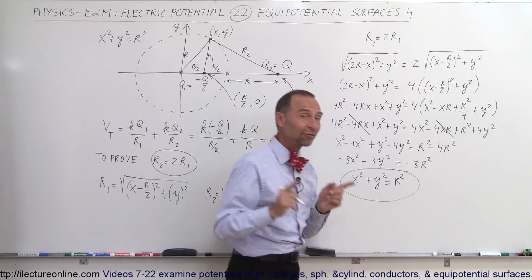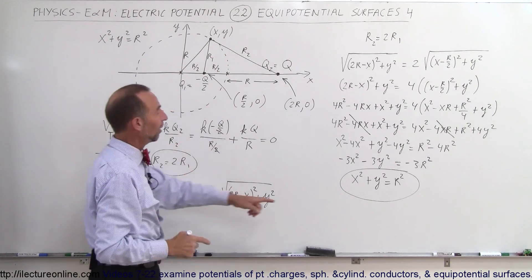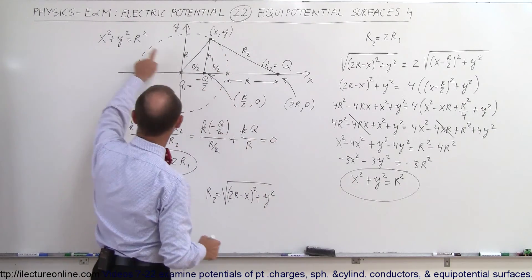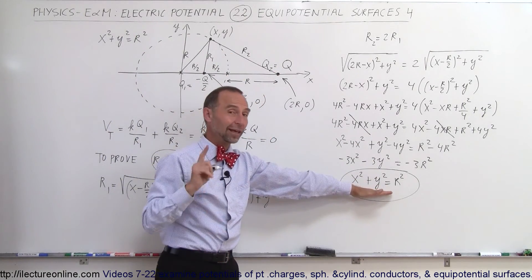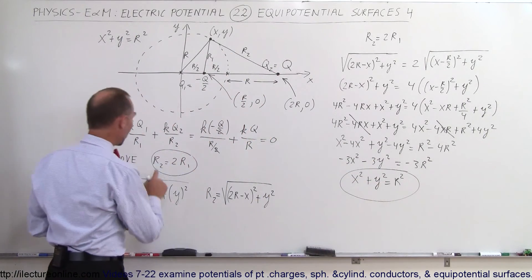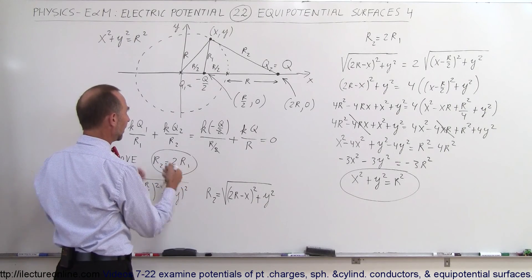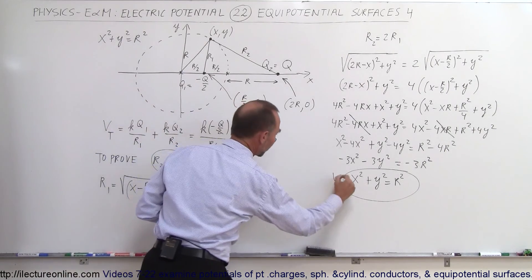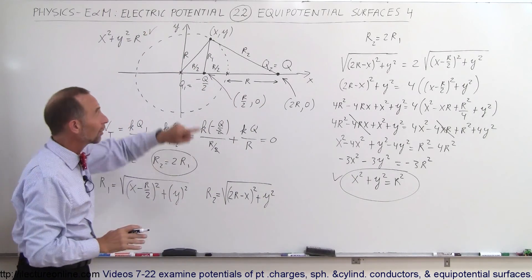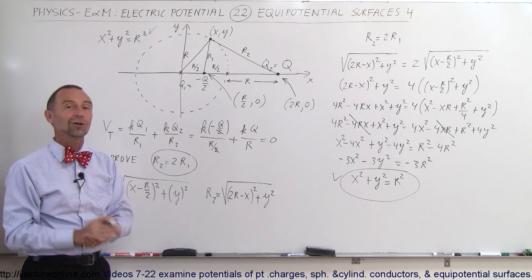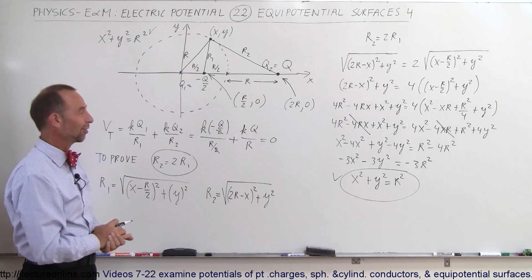This result, x² + y² = R², is exactly the equation of the circle we started with. That confirms the premise that R2 = 2·R1 holds everywhere on the circle, proving that the potential is zero at every point along the circle. So this circle is an equipotential circle.